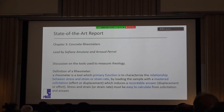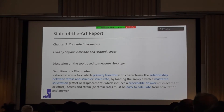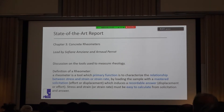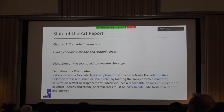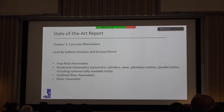Chapter 3 covers the rheometers — the tools and equipment. One of the first and most important decisions of the committee was to define what a rheometer is, which had not been formally established in our science. We define it as a tool whose primary function is to measure rheology — measuring the relationship between stress, strain, or shear rate. You load the sample with a controlled solicitation, either strain or shear rate, and get a recordable answer that can be easily transformed into rheological properties. According to that definition, we built chapter 3, which contains free-flow rheometers, largely rotational, as well as confined flow rheometers and static rheometers.